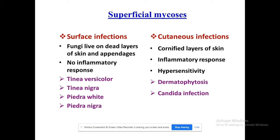To differentiate superficial mycosis from deep mycosis: in superficial mycosis, infection occurs on the dead layer of the skin with no inflammatory response, whereas in deep mycosis, infection is confined to the living tissue and inflammatory responses such as hypersensitivity are generated. Examples of superficial mycoses include tinea versicolor, tinea nigra, piedra white, and piedra nigra. Examples of deep mycoses include dermatophytosis and Candida infection.